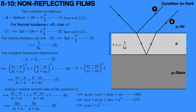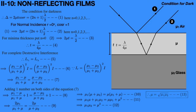Now cancel the mu1 mu term on both sides. So we can directly write: mu1 times mu2 equals mu squared. Hence, we can write mu equals the square root of (mu1 times mu2). That means the refractive index of the thin transparent material is equal to the square root of the product of the refractive indices of the air and glass medium, that is mu1 and mu2.